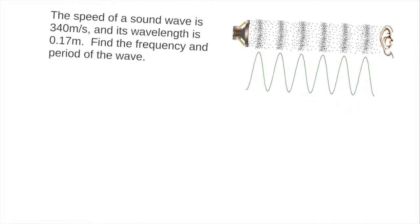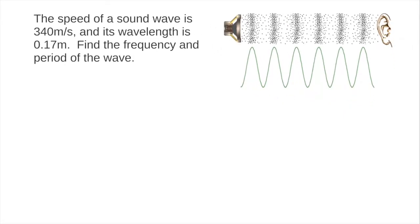Let's do one more example. The speed of a sound wave is 340 meters per second, and its wavelength is 0.17 meters. Find the frequency and period of the wave. We set up our equation, frequency times wavelength equals speed. We know the speed, and we know the wavelength. We can calculate frequency by dividing 340 meters per second by 0.17 meters per cycle. This gives us a frequency of 2,000 cycles per second.